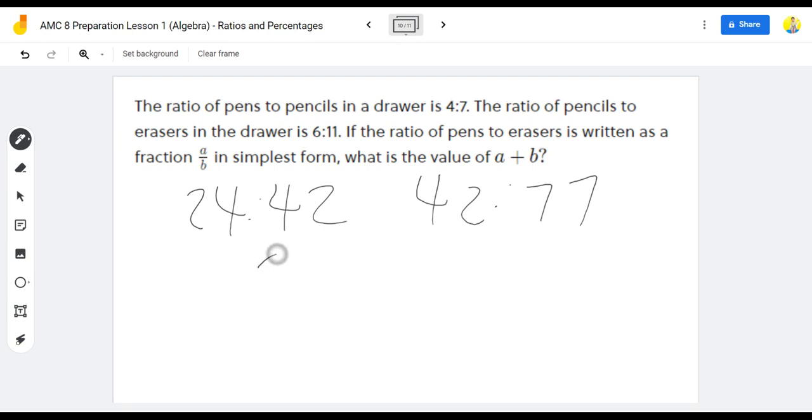So the ratio is 24 to 42 to 77, meaning that the ratio of pens to erasers is 24 to 77. And since that cannot be simplified, 24 plus 77 is our answer, which is 101.